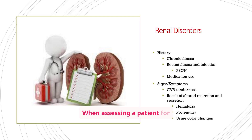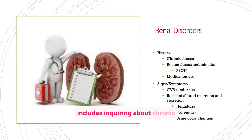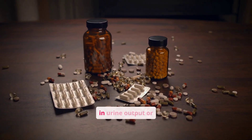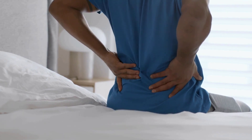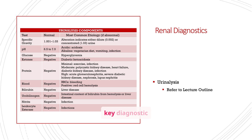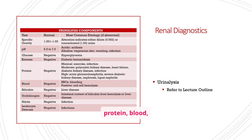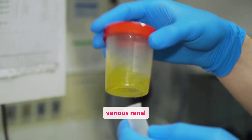When assessing a patient for renal disorders, it's important to gather a thorough history and look for specific signs and symptoms. This includes inquiring about chronic illnesses, recent infections, medication use, and any changes in urine output or color. CVA tenderness can also be an important indicator. Urinalysis is a key diagnostic tool, providing valuable information about specific gravity, pH, glucose, ketones, protein, blood, and other components in the urine. Abnormal values can indicate various renal disorders.